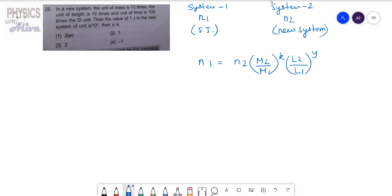Here it is said one joule. Joule means work done, right? What is the dimension of work done? Dimension of work done is M L² T⁻². This is the dimension of work done.